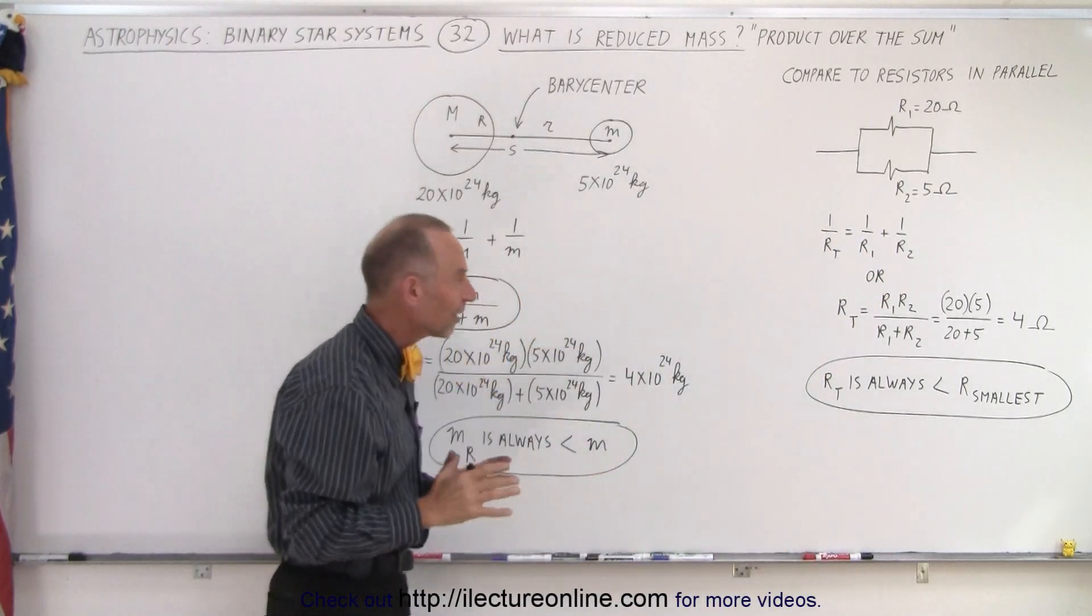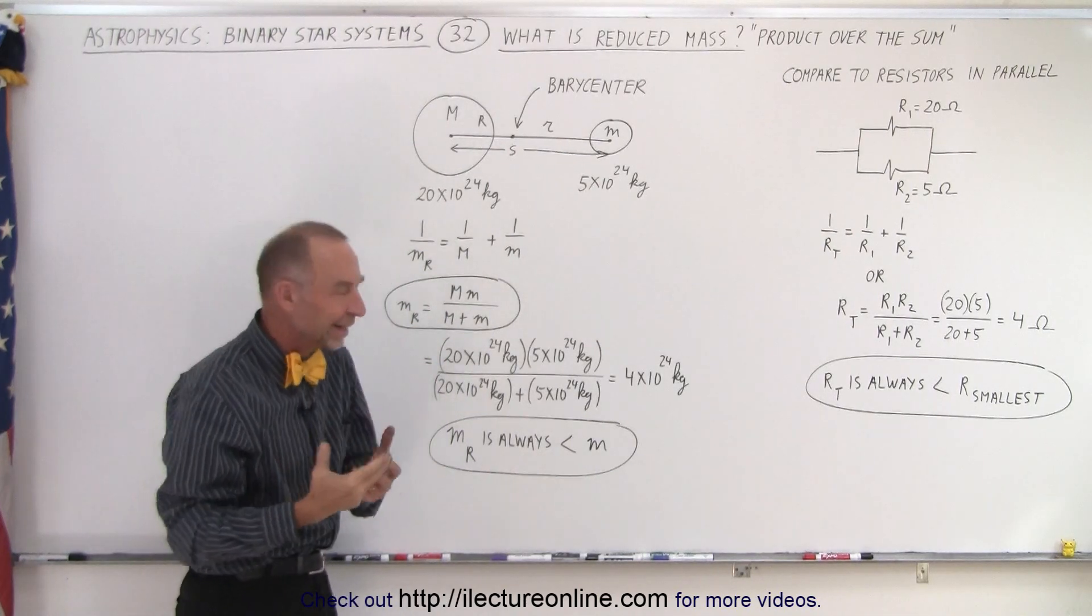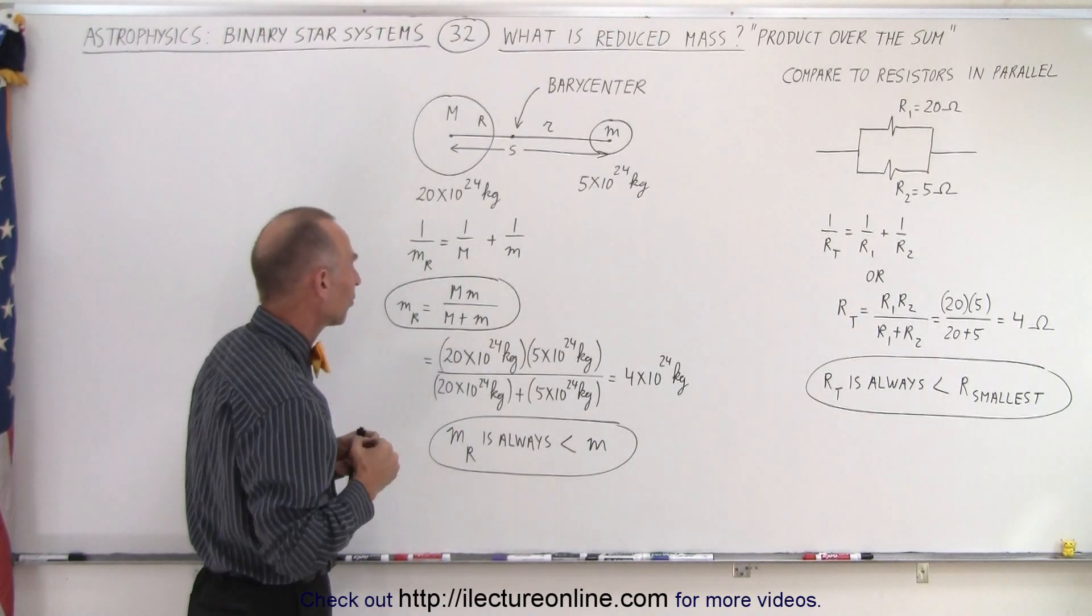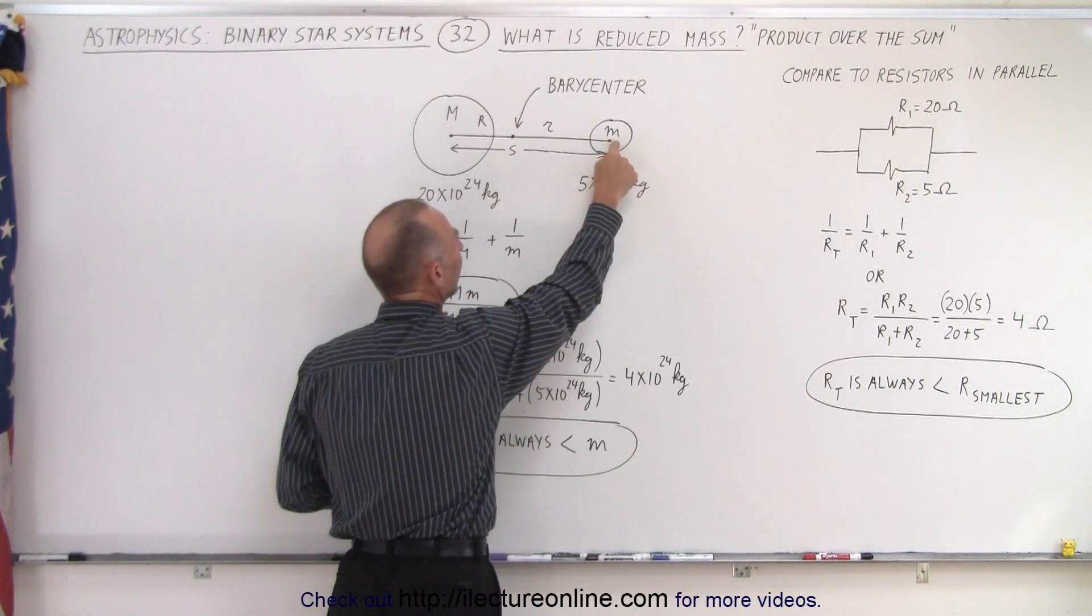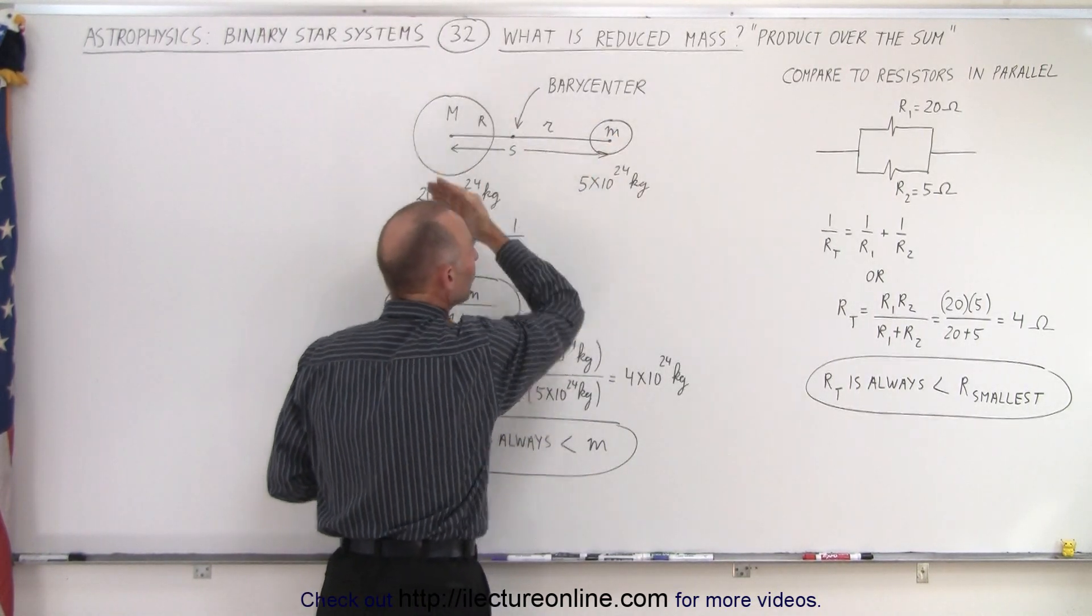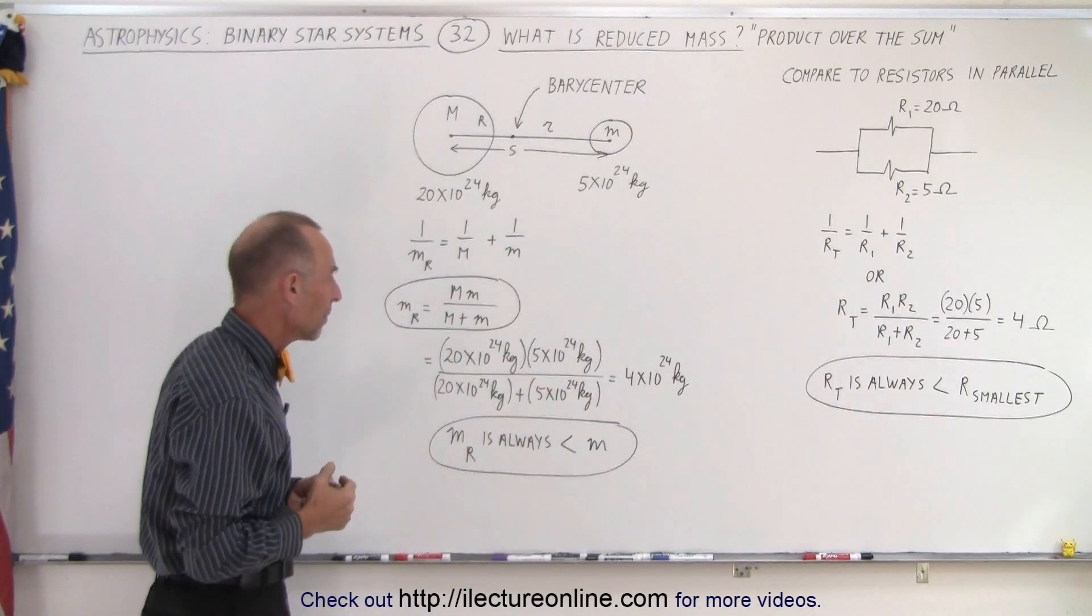So notice that since we use the same equation here the reduced mass will always be less than the smallest of the two masses. In other words the reduced mass is the mass that we're going to assign to the small object in order to make it correct as far as the equations of motion are concerned and where F equals MA.